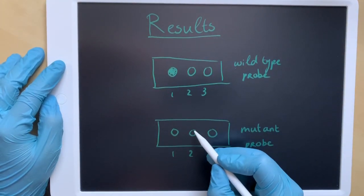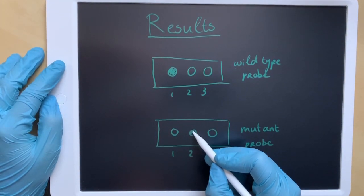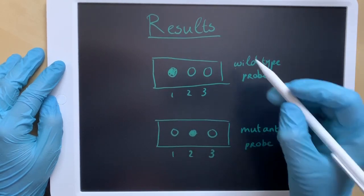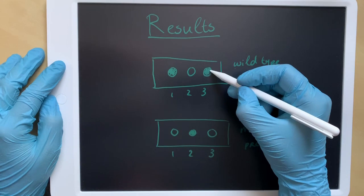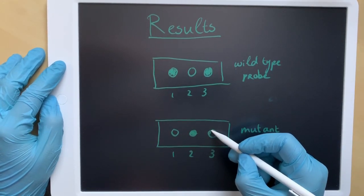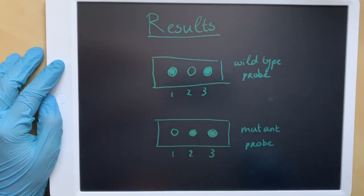In the sample taken from patient 2, only the mutant probe has bound to the DNA, meaning that patient 2 is homozygous for the mutant allele. The sample of patient 3 gives a fluorescent signal on both membranes, meaning that patient 3 is heterozygous and has both alleles.